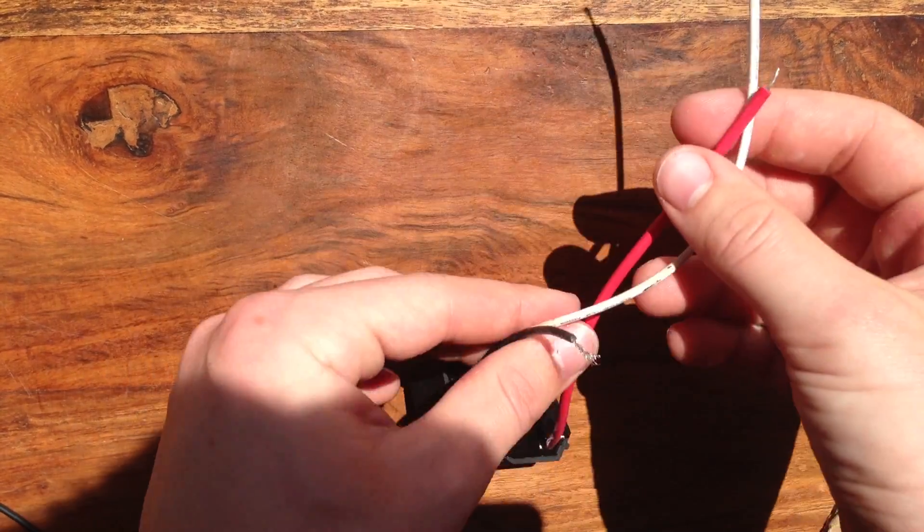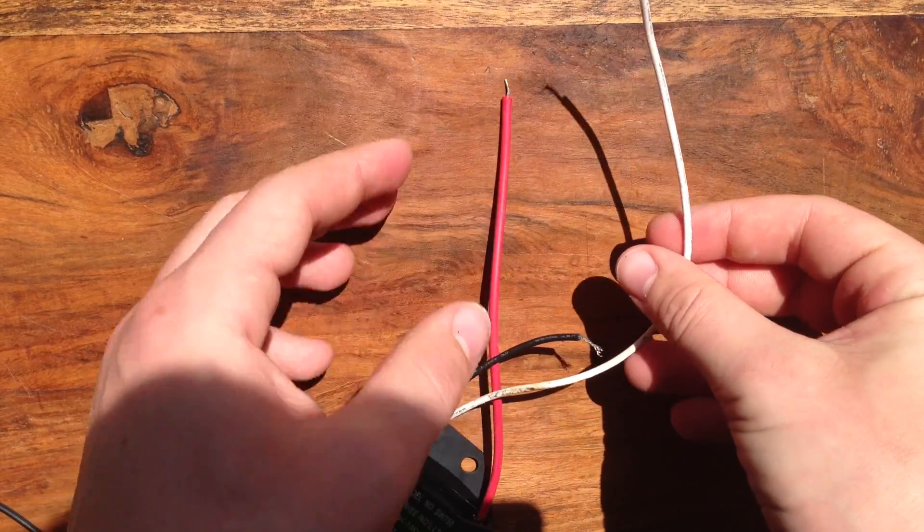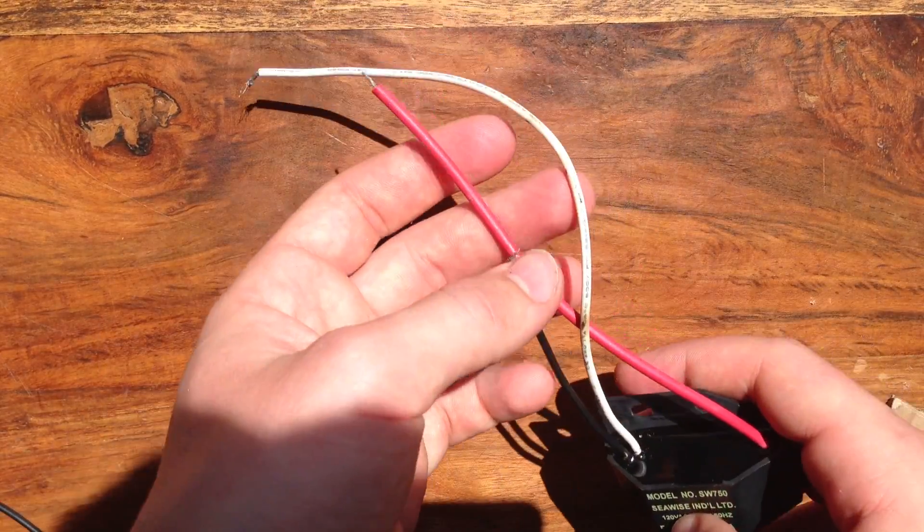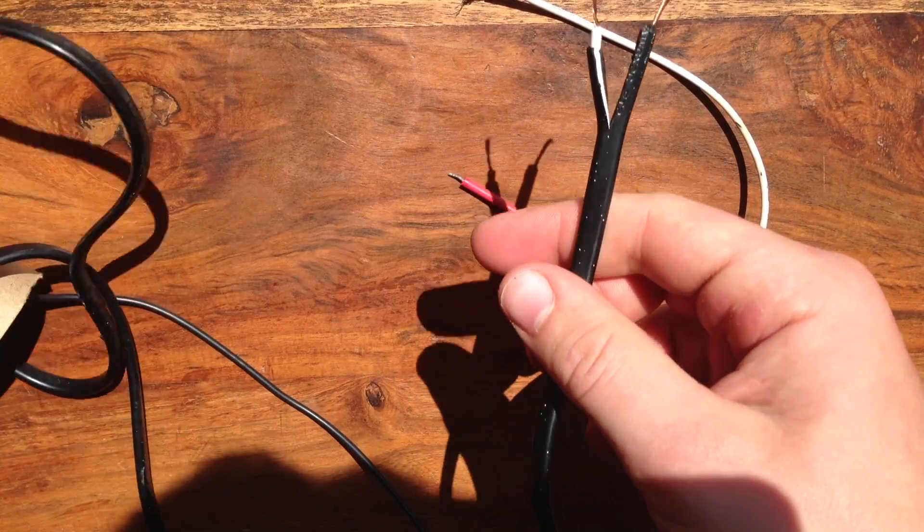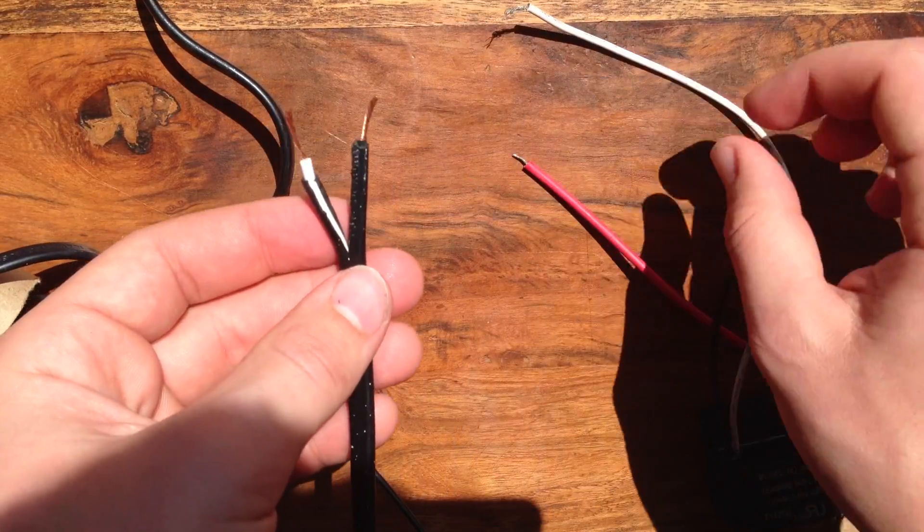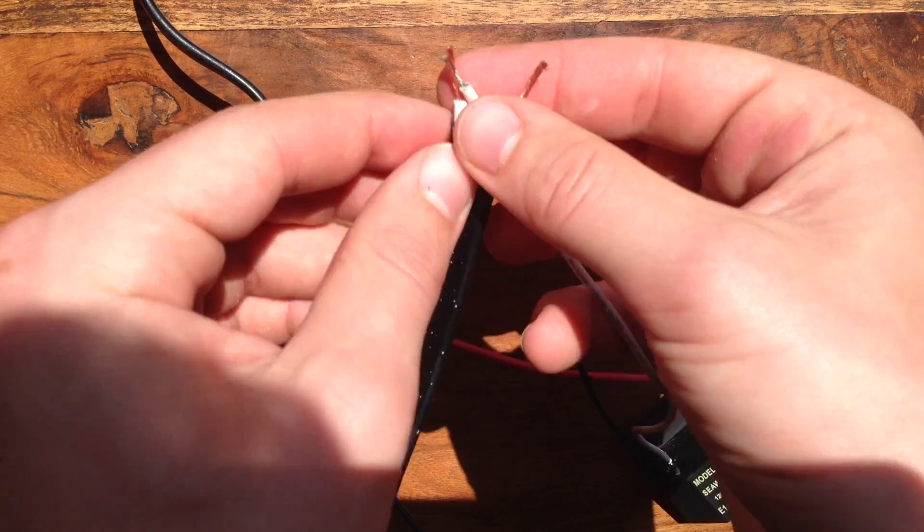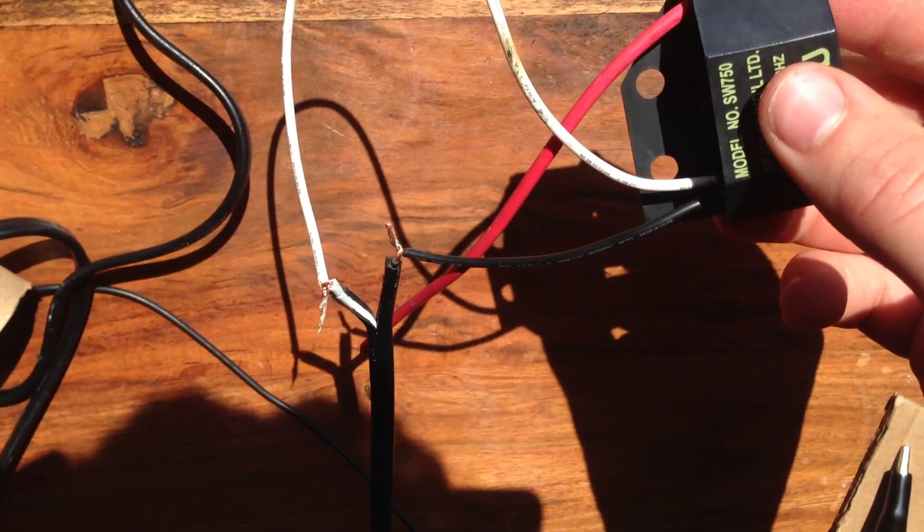Next, take your ion generator and strip off the ends of all the wires. There should be three of them: a red one, a white one, and a black one. Take your stripped-off AC power cord and the white and black wires from your ion generator and connect all the wires like this to the white and black wires of the ion generator and connect to the AC power cord.